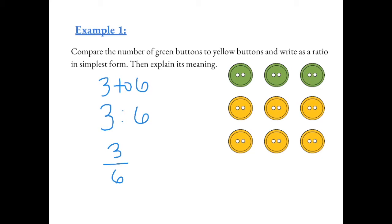But now we want to simplify. We have to divide the numerator and denominator by 3 and we get 1 half. This means for every one green button, there are two yellow buttons.